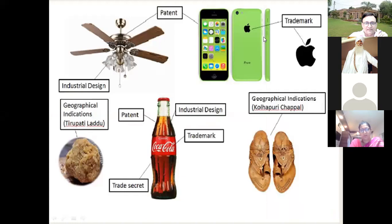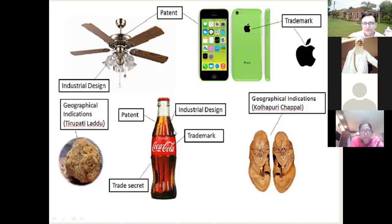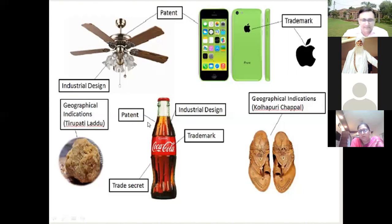Examples of patents and designs: the motor inserted in a ceiling fan is patented, and its design — including the fan blades and lighting — may be covered under industrial design. Mobile phone circuits and designs may also be patented. The logo on a mobile phone is a trademark. Kolapuri Chappal is aligned with the Kolapur region and is covered under geographical indication. The Coca-Cola bottle shape is covered under industrial design, the Coca-Cola slogan under trademark, and the content/formula under trade secret or patent. Various options are available to protect rights under different laws.